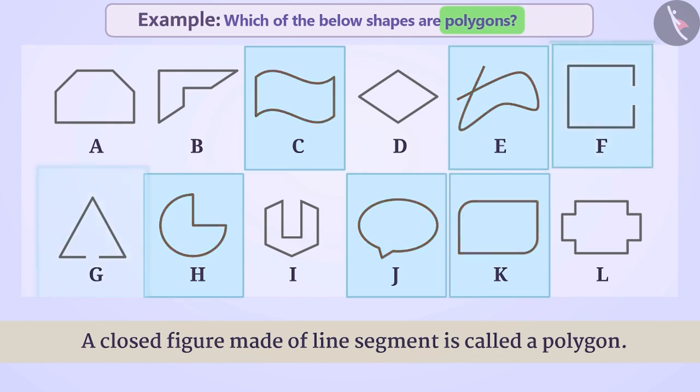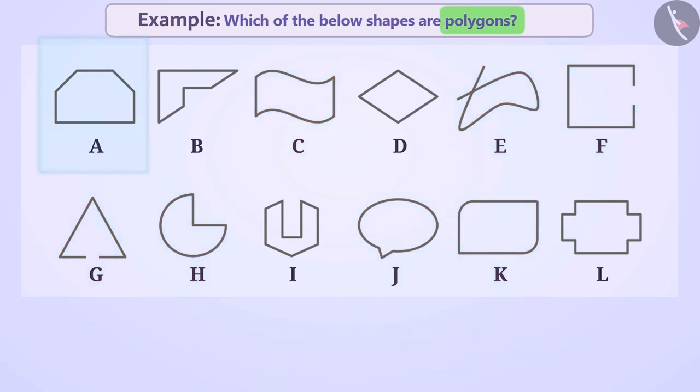Similarly, figure F and G are made of line segments but these are not closed figures. Hence, all these figures C, E, H, J, K, F, G are not polygons.